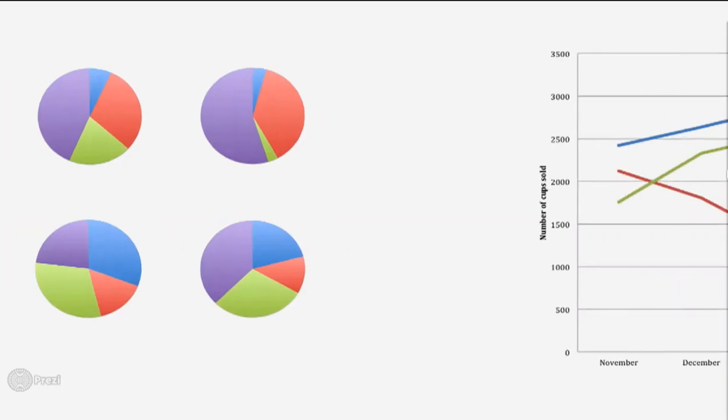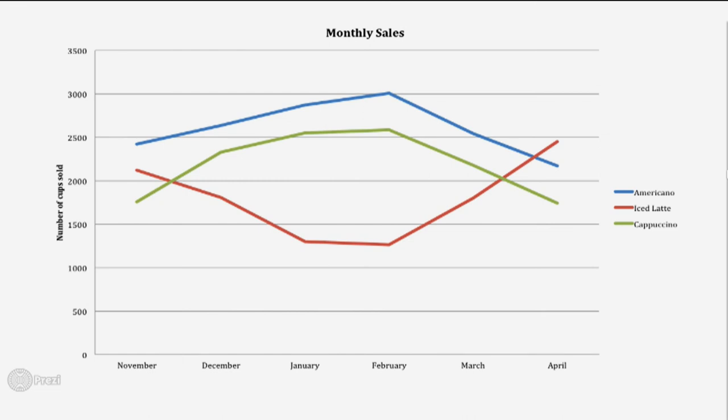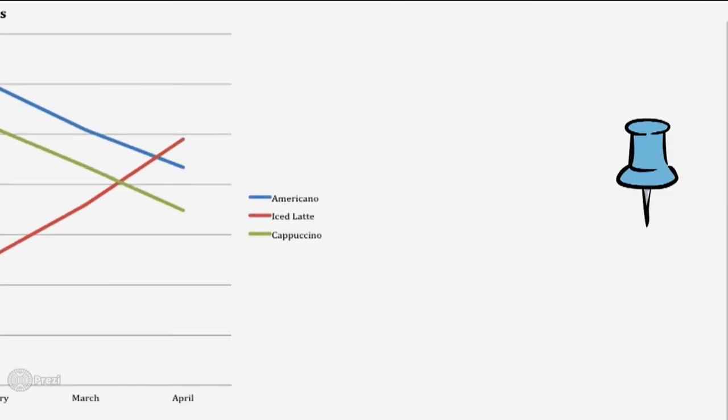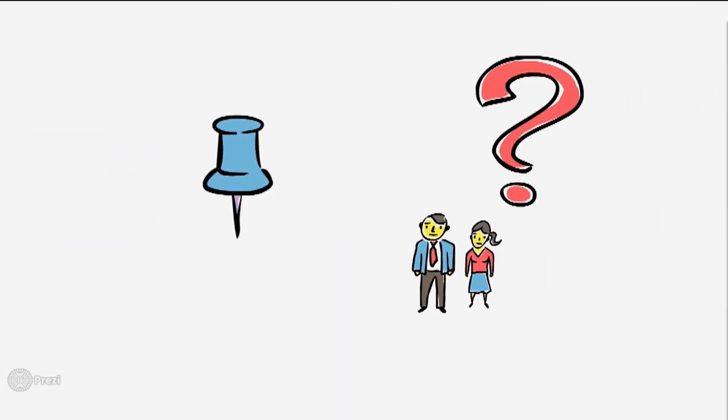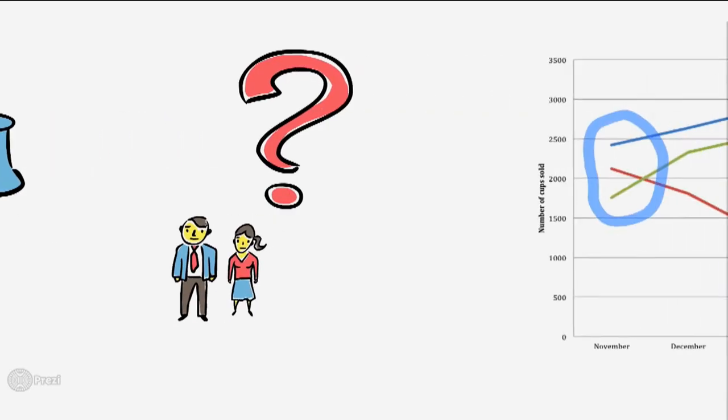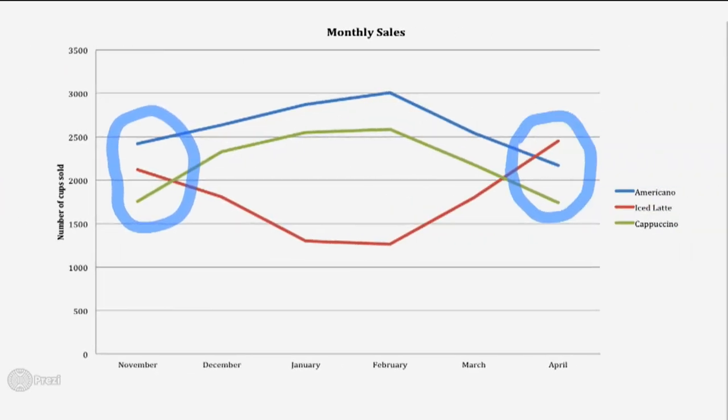A line graph plots data along a line like this. The only problem with line graphs is it's hard to pinpoint the exact value, so we often have to make an approximation. But line graphs are great for noticing trends and patterns.